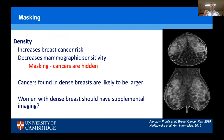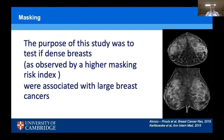We wanted to study whether cancers found in dense breasts were likely to be larger. To reduce the size of breast cancers detected, this poses the question of whether women with dense breasts should receive supplemental imaging — which could be an MRI, contrast-enhanced mammography, or ultrasound. The purpose of this study was to test if dense breasts, as observed by a higher masking risk index, were associated with a larger breast cancer.